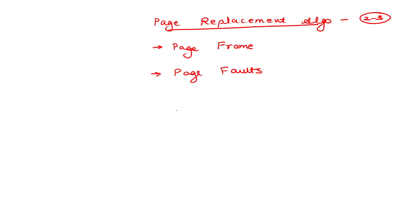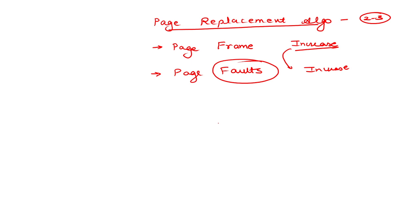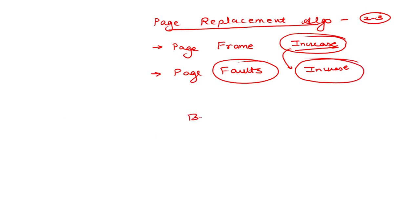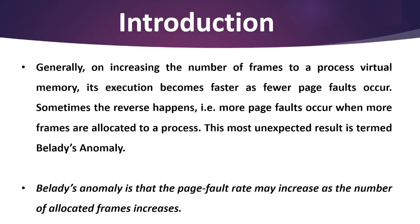Belady's anomaly says that whenever we increase the number of page frames, that will automatically increase the number of page faults. This is a major problem because more page faults mean the system works slower and becomes weaker. However, Belady's anomaly does not occur everywhere all the time.